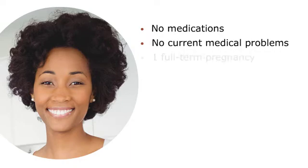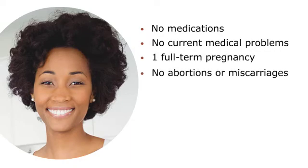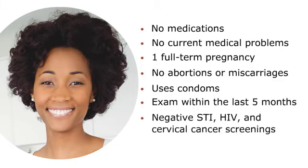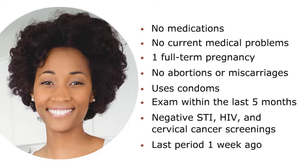She indicated a history of one full-term pregnancy, no abortions or miscarriages, and lists condoms as her current contraceptive method. She also indicated a gynecological exam within the last five months, which included a cervical cancer screening and STI and HIV tests with negative results. Her last period started one week ago, and she is not experiencing any menstrual-related problems.